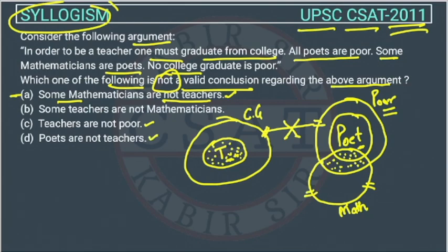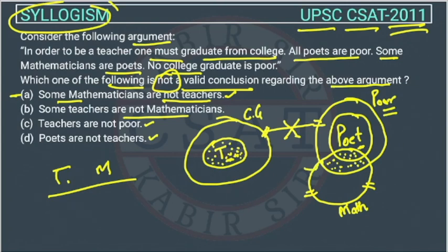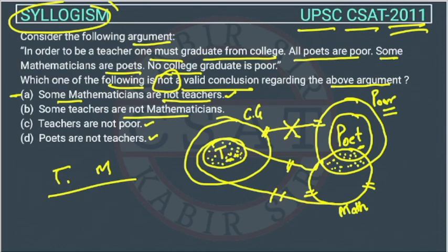The second option: some teachers are not mathematicians. The relationship between teacher and mathematicians is not given. It is possible that the mathematician circle will overlap with the teacher circle, but the information is not given. It is also possible that all teachers are mathematicians. Since the relationship between teacher and mathematician is not given, we cannot conclude this — so this is wrong. Therefore, our answer is option B.